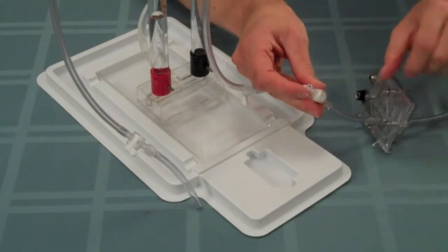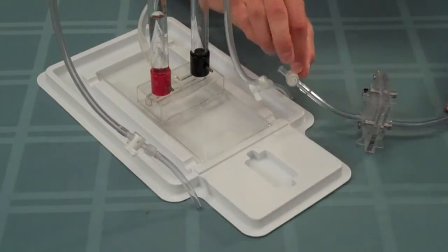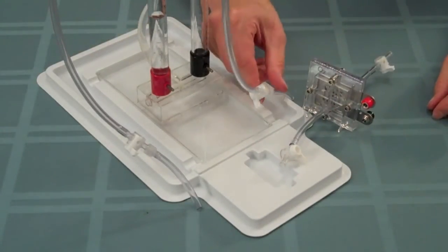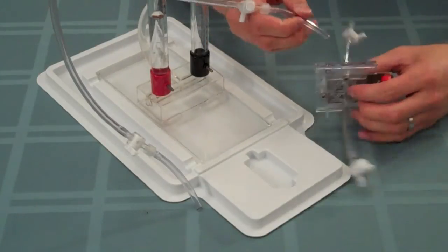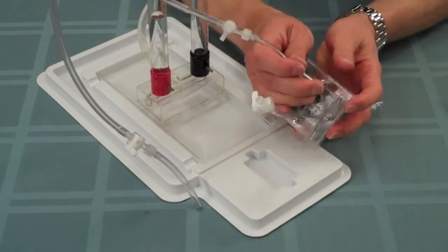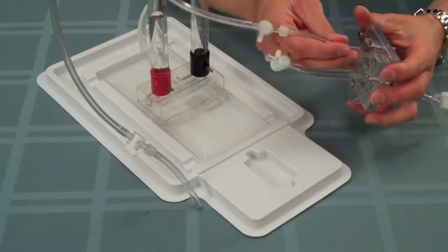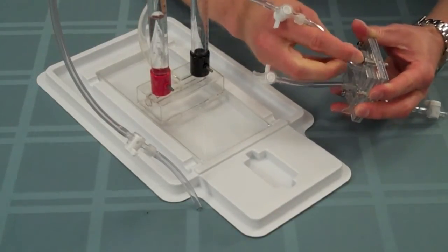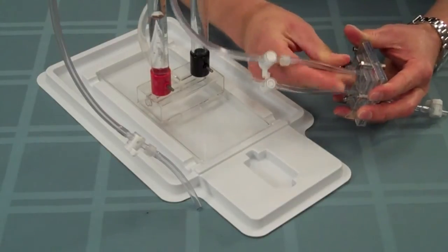You also want to make sure that both of these valves are in the closed position. Next, take the hydrogen gas supply tube and connect it to the top port of the fuel cell on the side that's labeled hydrogen. All these connections should be fairly snug.